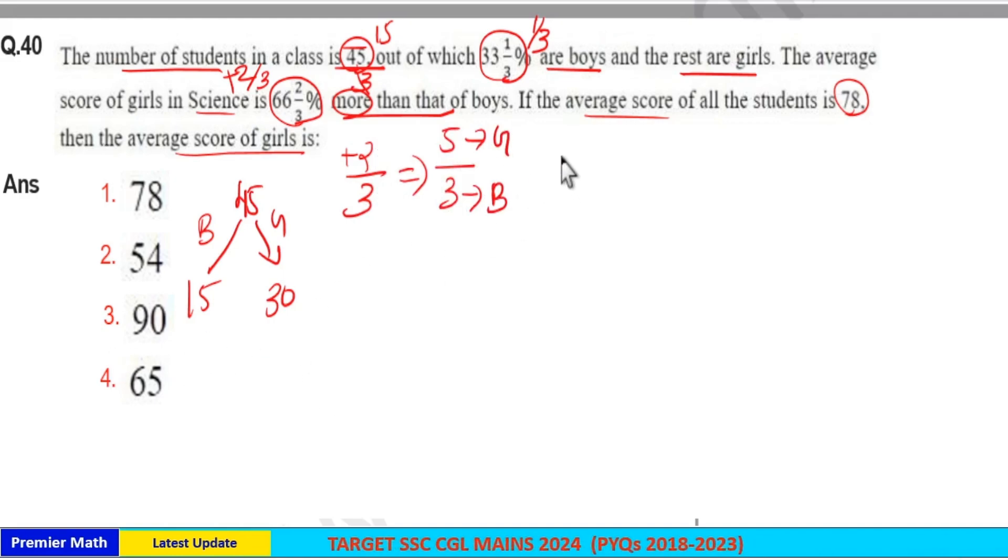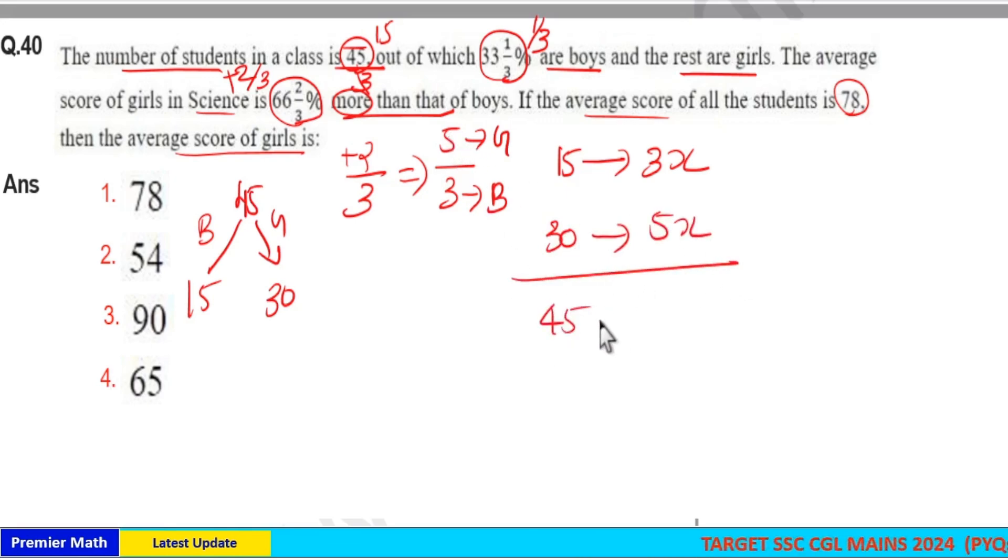Now there are total 15 boys, and for these 15 boys, average score in science is 3 parts, I'll take it as 3x. And for 30 girls, average score in science is 5 parts, I'll take it as 5x. We already know total students are 45 and total students' average score in science is 78.